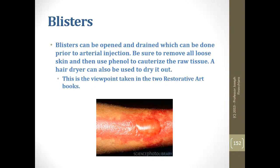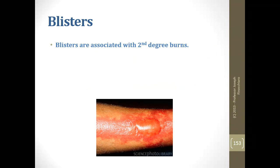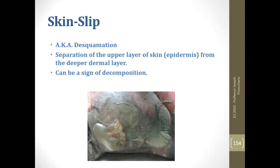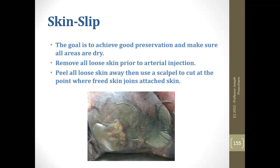Blisters are typically associated with second-degree burns: first degree is redness, second degree is blisters, third degree is charring. Skin slip, also known as desquamation, is the separation of the epidermis from the deeper dermal layer and is one of the signs of decomposition. Your goal is to preserve, make sure everything is dry to make a base for restoration, and remove all the loose skin — peel it away, then use a scalpel to cut at the point where freed skin joins attached skin to save as much as possible.